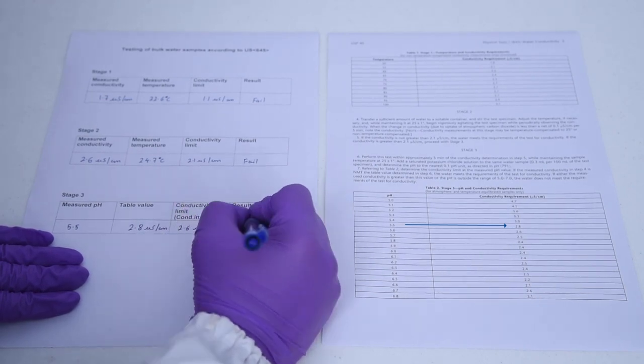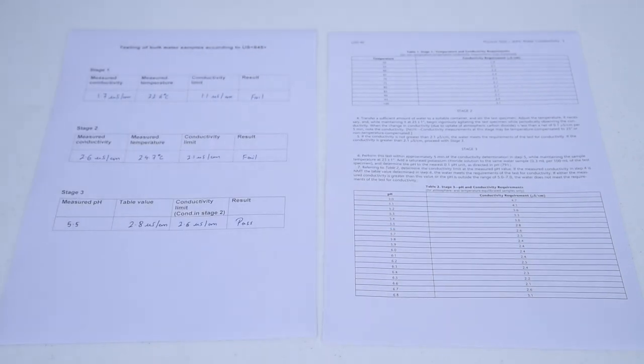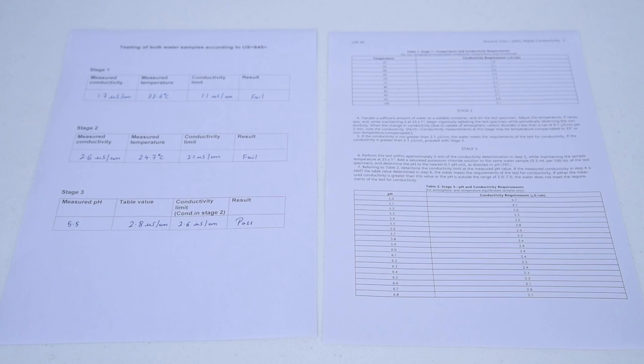In our case, the pH value corresponding to conductivity value measured in stage two is between pH 5 and 7.00. So the water meets the requirements of USP 645.